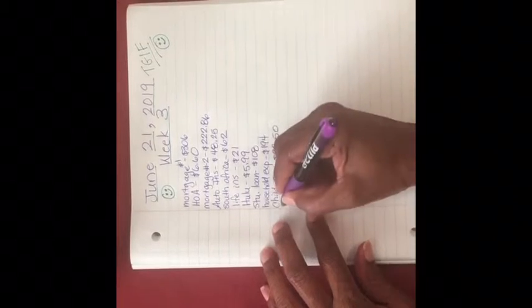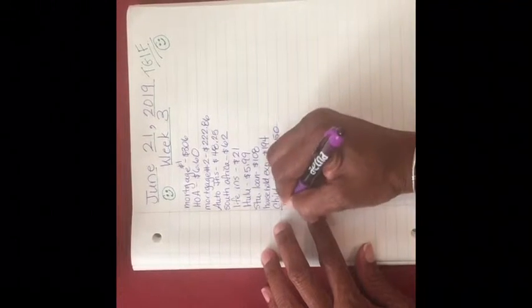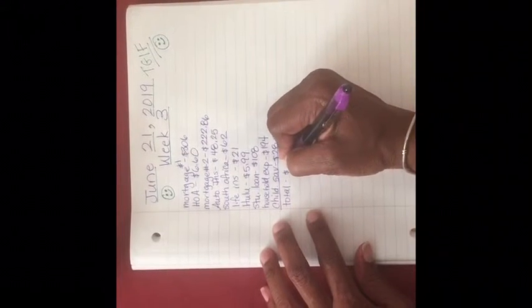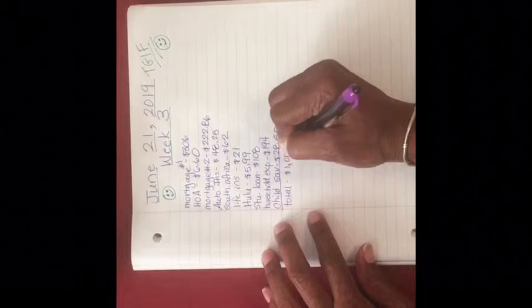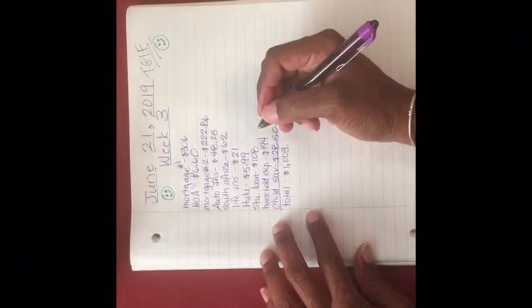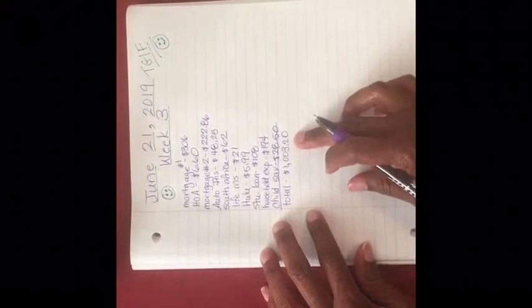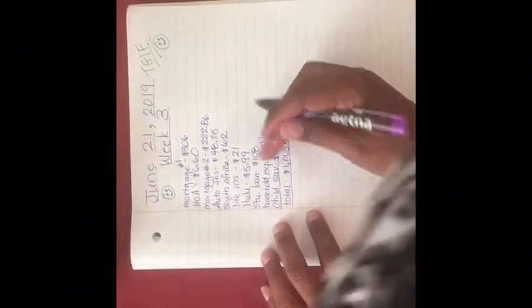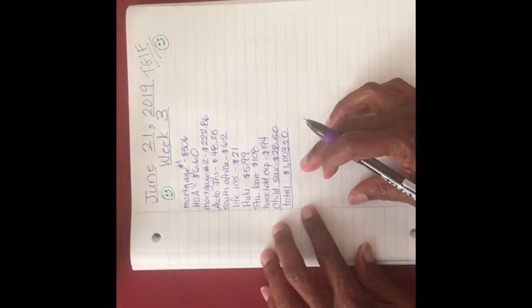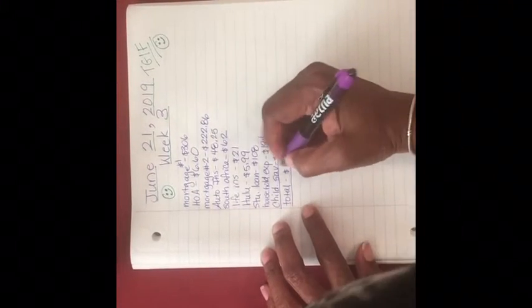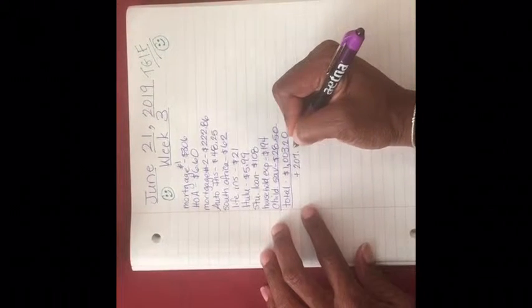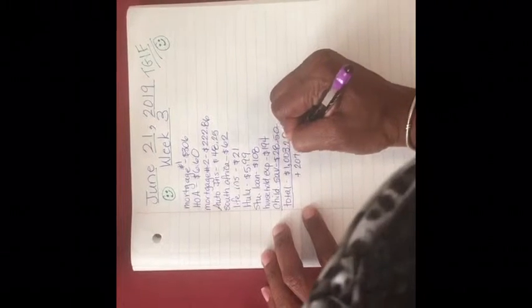And lastly, I have my children's savings account where an automatic amount of $28.50 goes into that account. So this is what I have for week three. And that total is going to come to $1,003.20. Based on that total, with the amount that I do have in my paycheck this week, I know I am going to be in the positive of $207.80.